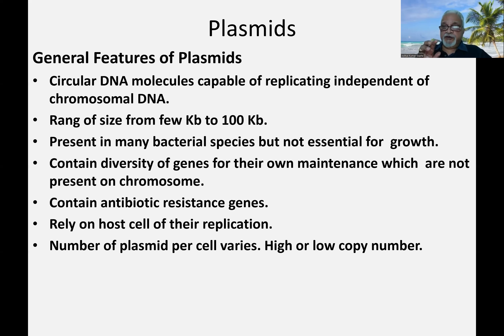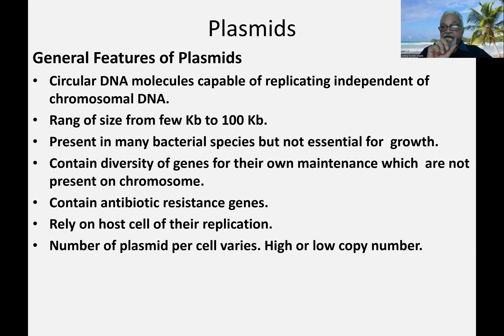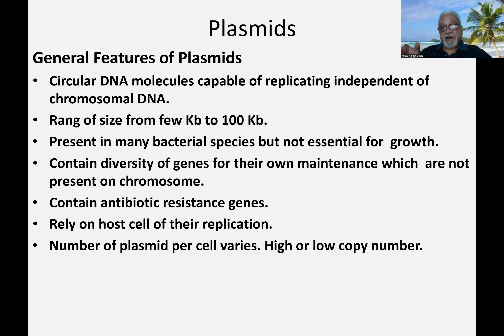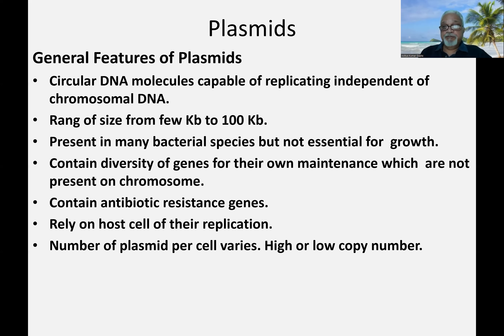During conjugation, cell-to-cell contact between donor and recipient is facilitated by the F plasmid in the donor cell. The genes responsible for the conjugation process and gene transfer are located on this plasmid, so the presence of the F plasmid in a cell makes that cell a donor cell. A cell that does not have this plasmid remains the recipient cell or F-minus cell. Within the same species, some cells may be F-plus and others F-minus.